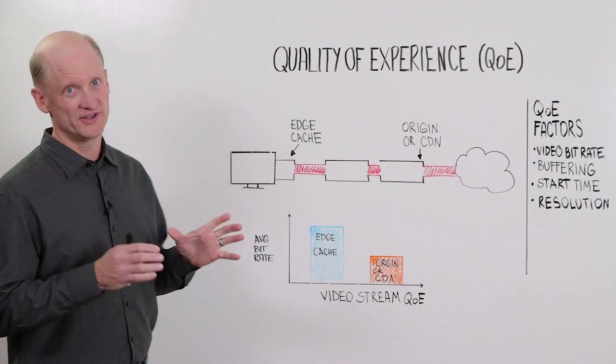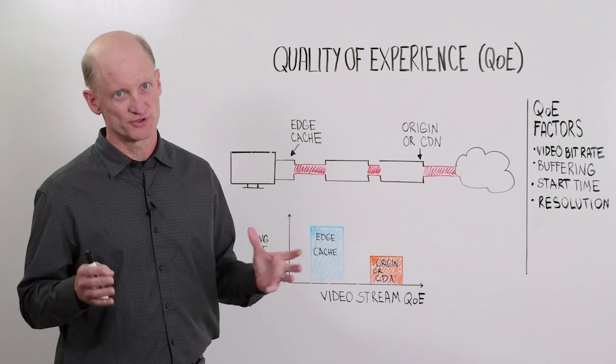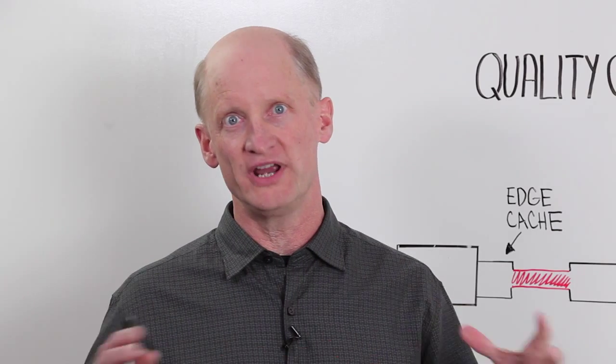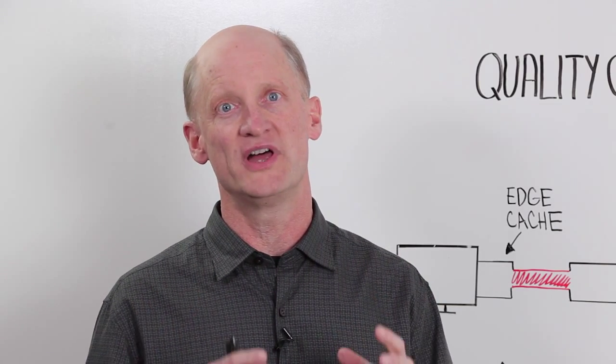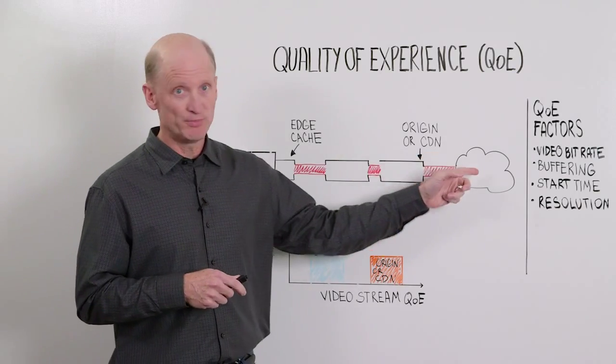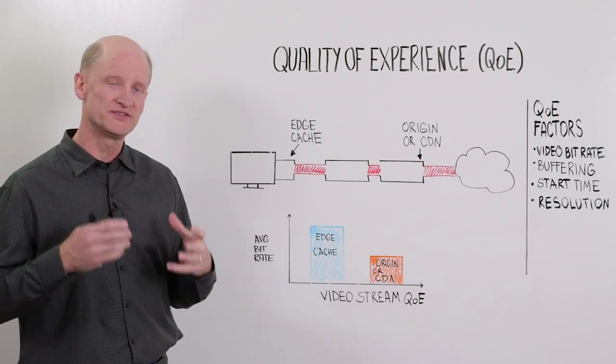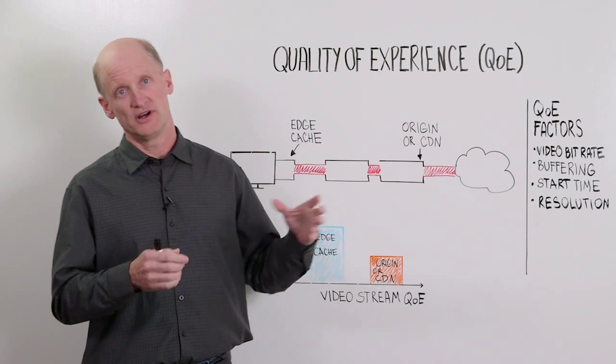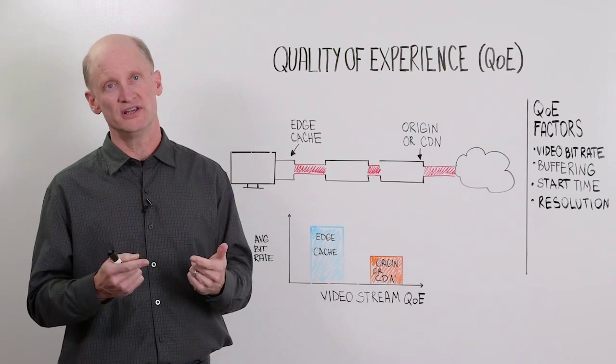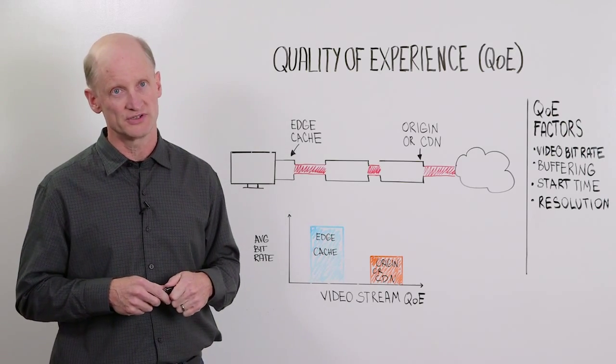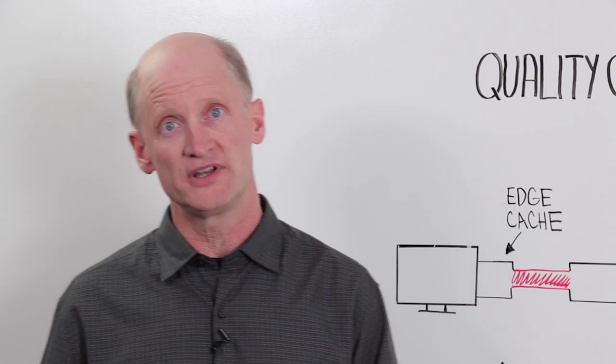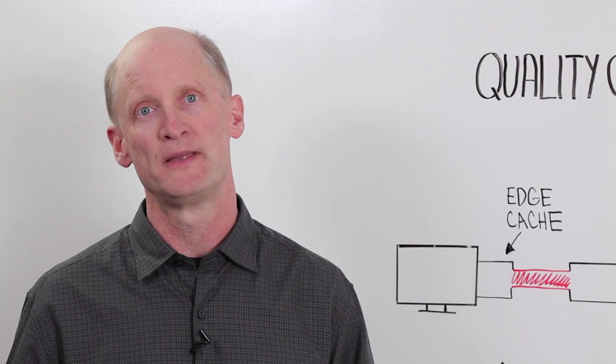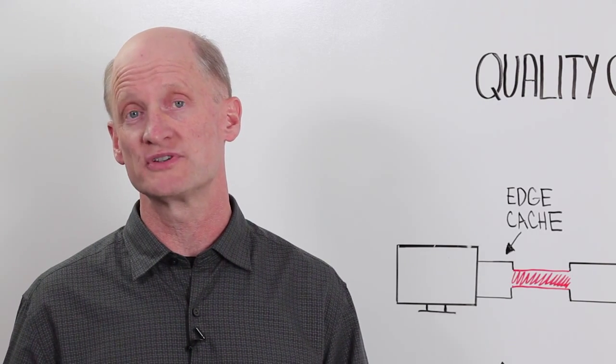There are a number of factors that determine the quality of an experience for a consumer who's watching online video. These include the video bit rate—the rate of the stream that the consumer is watching—the rebuffering rates or incidents during that video session, the start time, the time it takes for the video stream to begin playing, the resolution of the stream itself, and other factors. For example, the bit rate shifts that may occur and even the effectiveness or performance of the application.